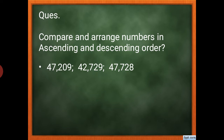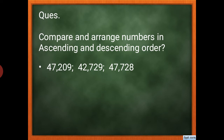Now, let's compare and arrange three numbers in ascending and descending order. As we discussed, we first compare the digits at the highest place — beginning from ten-thousands, then thousands, then hundreds. In ascending order we go smallest to biggest; in descending order, biggest to smallest.